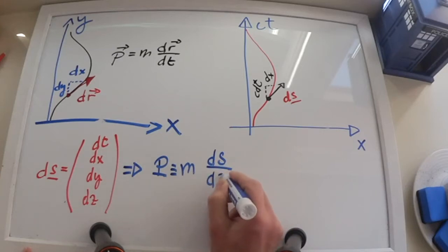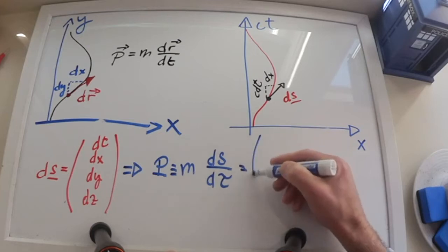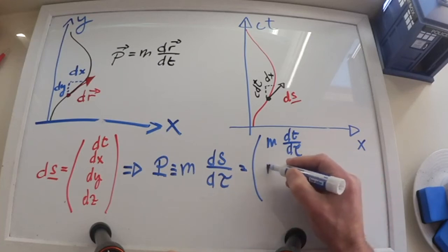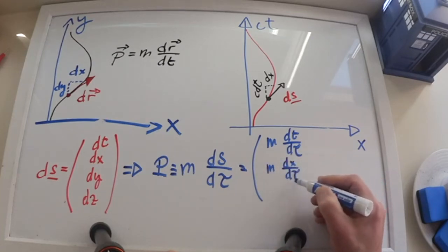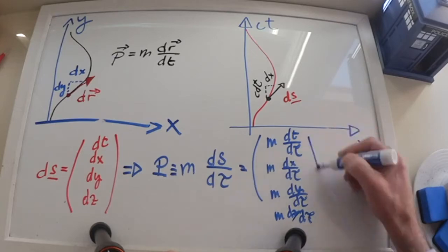We will write the generalization momentum as a four-vector, that is, a vector in spacetime defined as pt equals m dt/d tau, px equals m dx/d tau, py equals m dy/d tau, pz equals m dz/d tau.